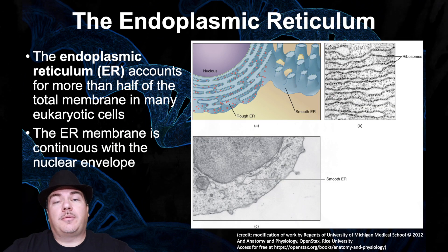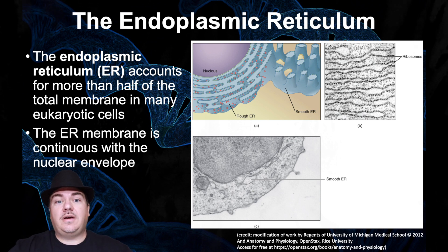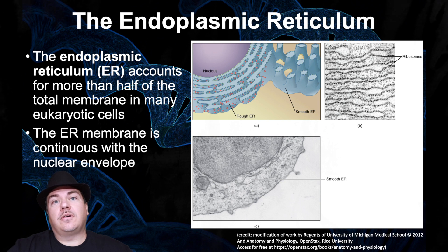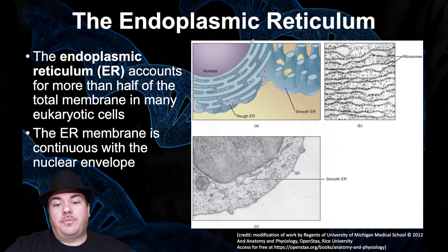The first part of the endomembrane system we're going to discuss is the endoplasmic reticulum, or ER for short. The ER accounts for more than half of the membranes inside your cells — in other words, you have a lot of ER. The ER membrane is continuous with the nuclear envelope, meaning the membrane around the nucleus continues on to become the ER, so they're physically attached to each other.